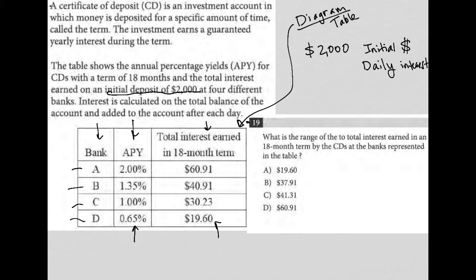The question asks: what is the range of the total interest earned in an 18-month term by the CDs at the banks represented in the table? So for the total interest earned, we're looking at the third column here. Range means we want to take the highest value and subtract the lowest total interest earned. That value should be the range — range is always the difference between high and low.